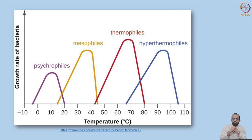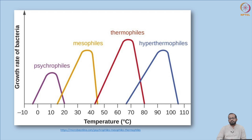Temperature is a major processing parameter in canning. Based on temperature preference, microorganisms are classified as psychrophiles (preferring -5 to 20°C), mesophiles (15 to 45°C), thermophiles (45 to 80°C), and hyperthermophiles (65 to 105°C or higher). Psychrophiles are target organisms in chilled and frozen technologies, while hyperthermophiles are found in natural thermal vents.